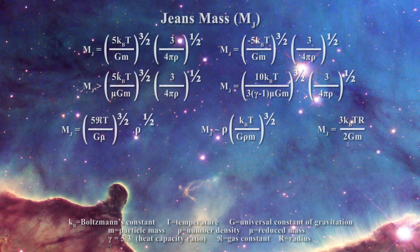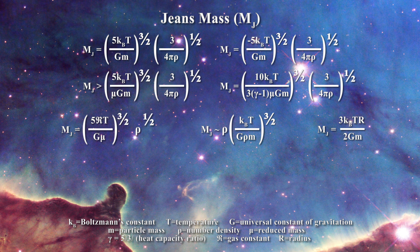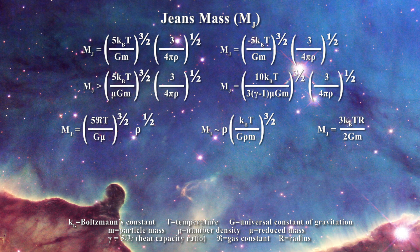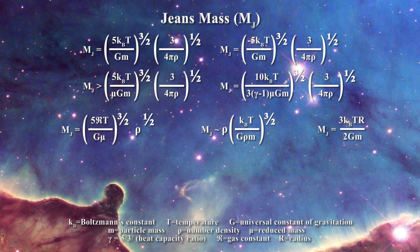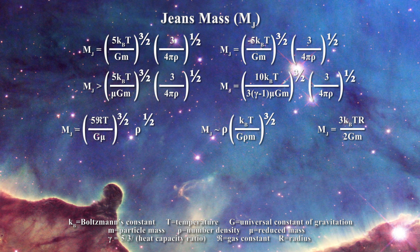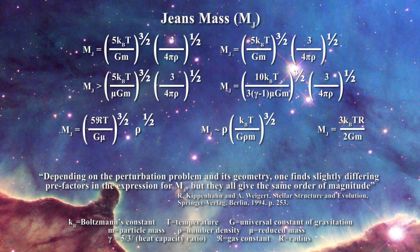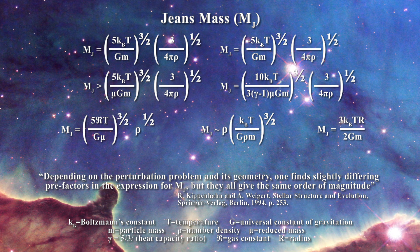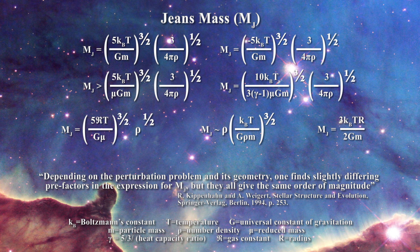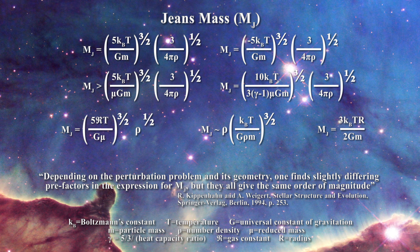Now I wish to turn my attention to the Jeans mass and what became known as a Jeans swindle. If one searches the astrophysical literature, various expressions can be found for the Jeans mass. Kippenhahn and Weigert tell us that depending on the perturbation problem and its geometry, one finds slightly different pre-factors in the expression for the Jeans mass, but they all give the same order of magnitude.